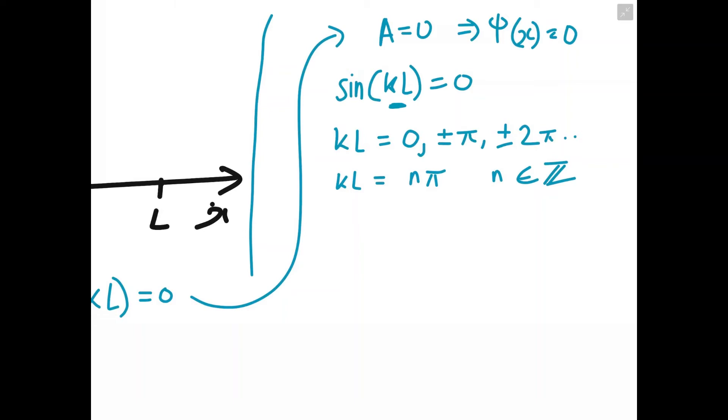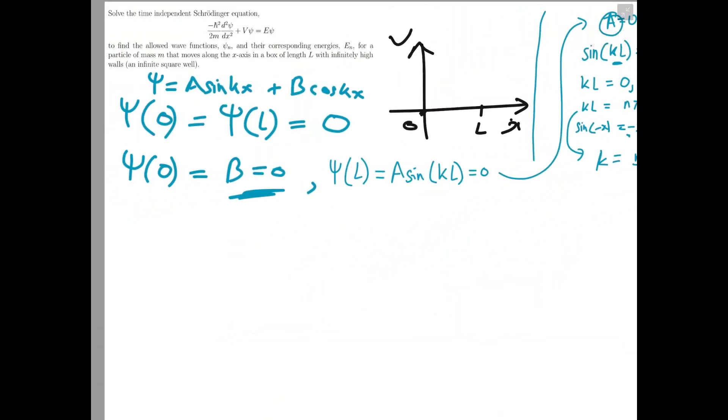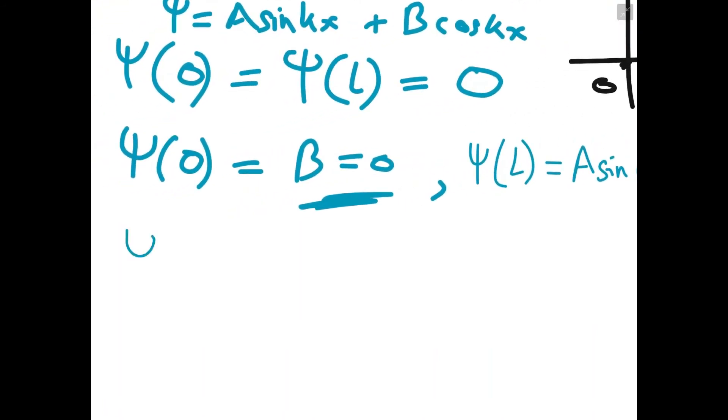In fact, we can restrict n to just positive integers because sine is an odd function. So sine of minus x is equal to minus sine x. So if we put in a negative integer, we could change it into a positive one and the negative sign would just get absorbed into the constant a. So what we can say from here is k is equal to nπ over L. So now we know what k is. We can rewrite our wave function as a sin(nπx/L), where n is a positive integer.